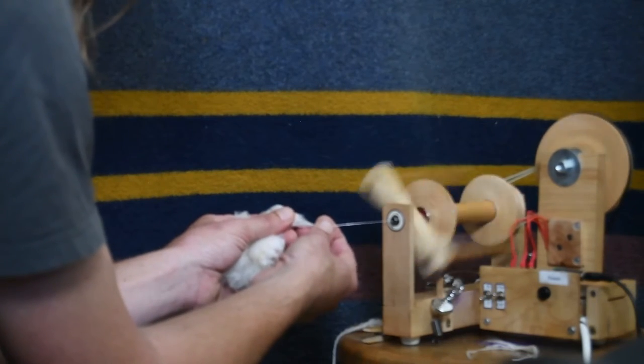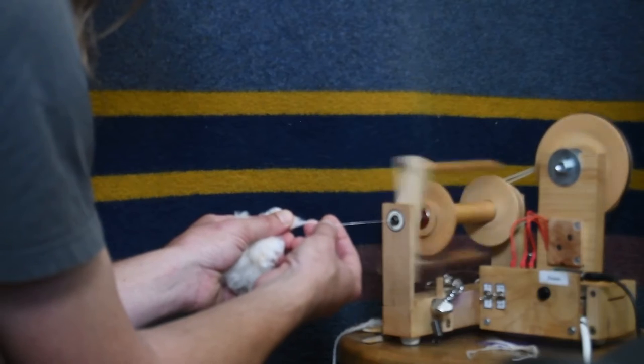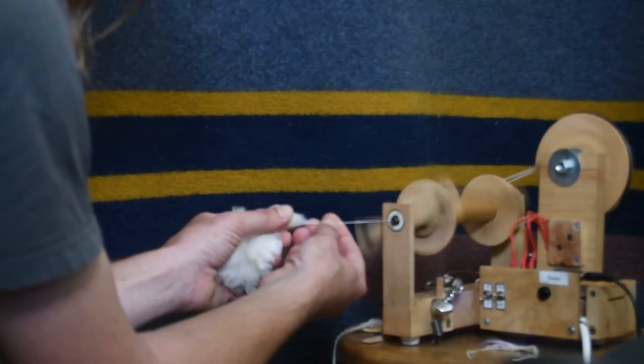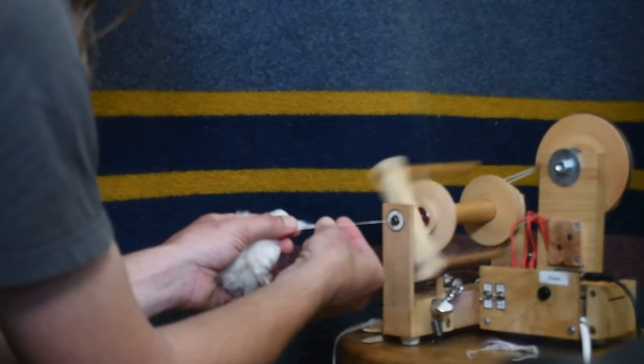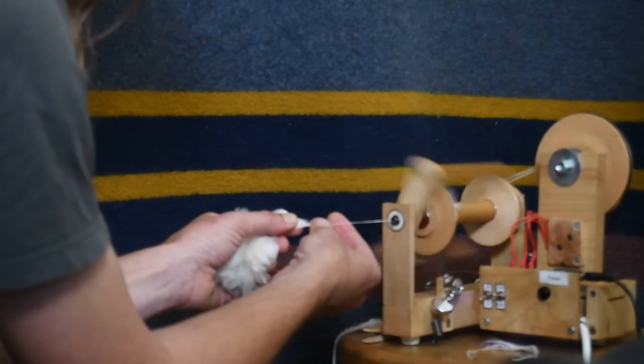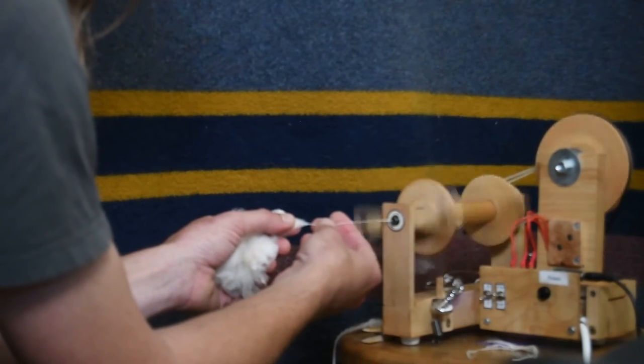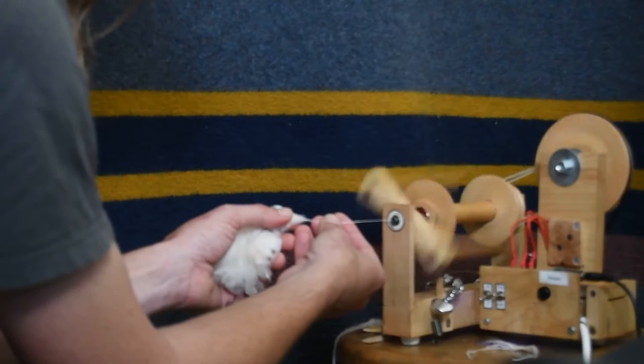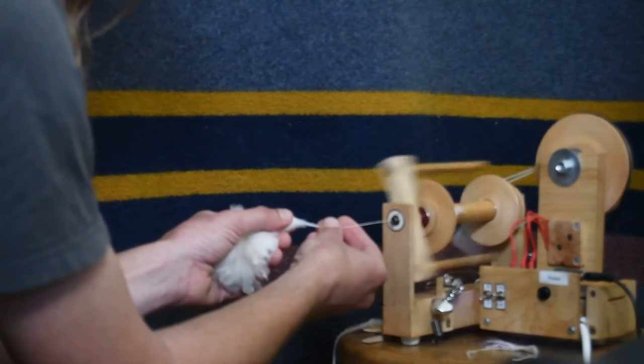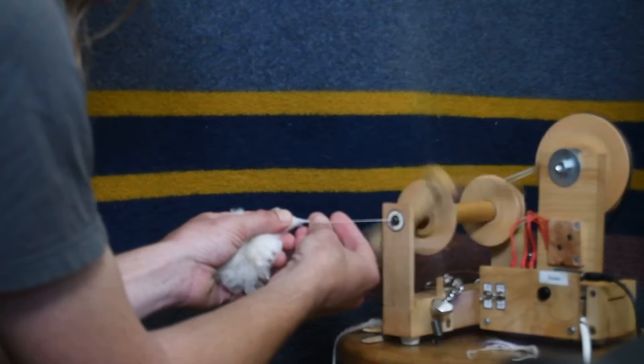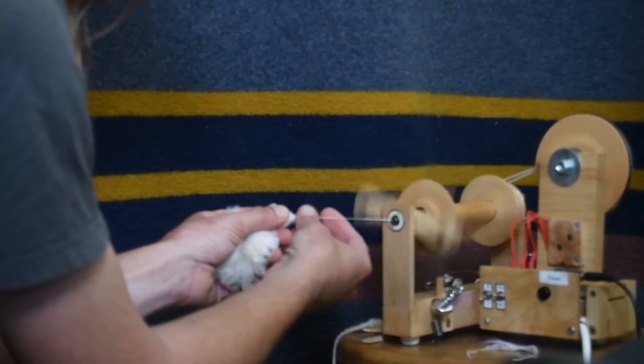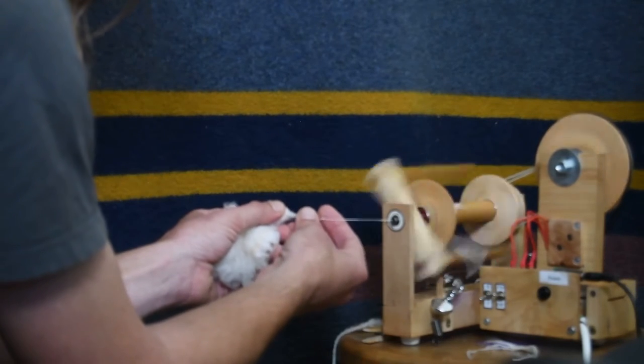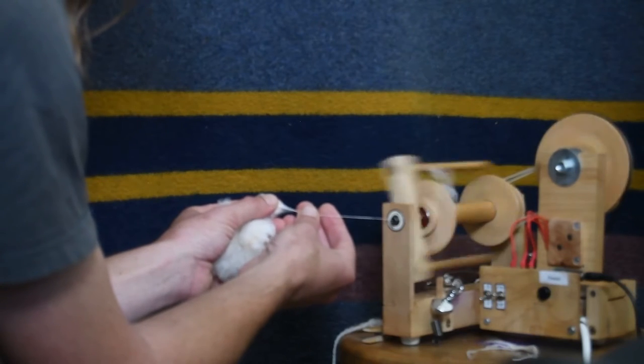I used to just use cotton twine. And cotton twine works, but I find that the first few yards with it can be kind of inconsistent. So a leader with the specific fiber that you're spinning just for me helped me with the first couple.